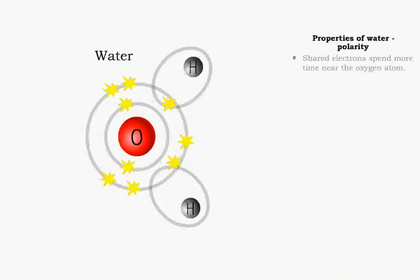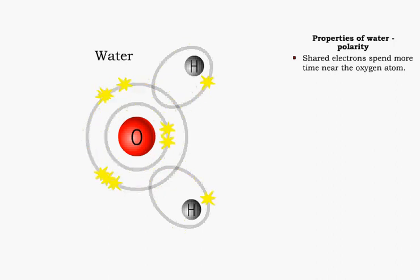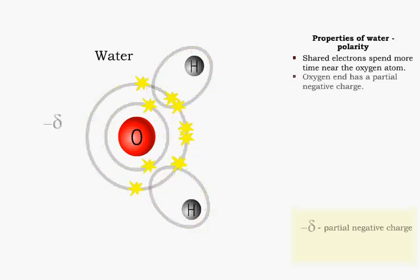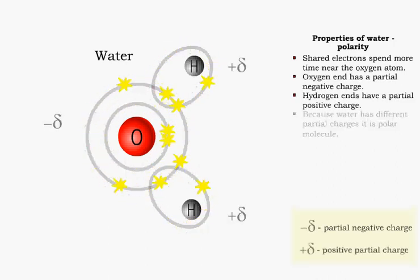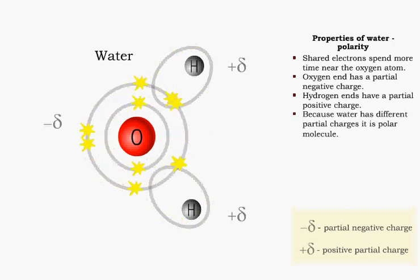In water, the electrons spend more time near the oxygen atom, giving it a partial negative charge. The hydrogen ends have a partial positive charge. A molecule that has different partial charges is known as a polar molecule.